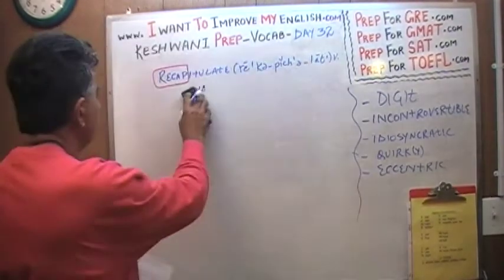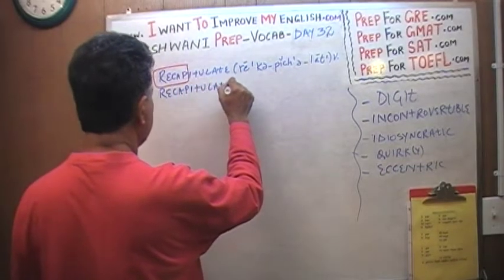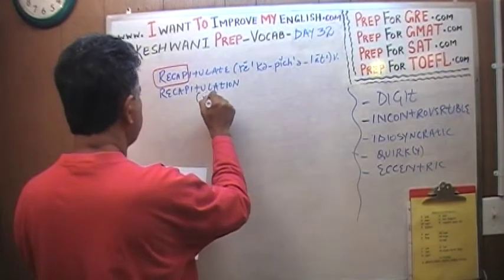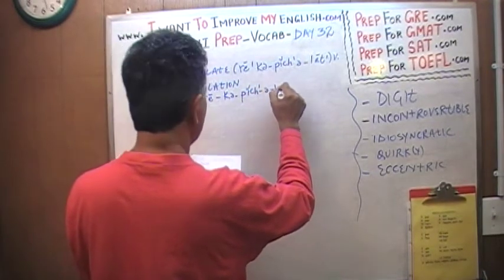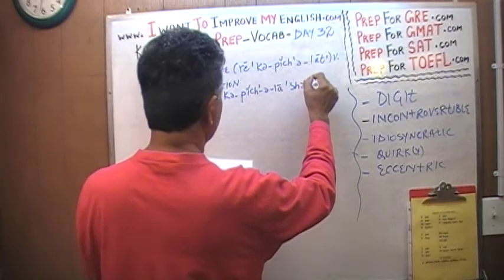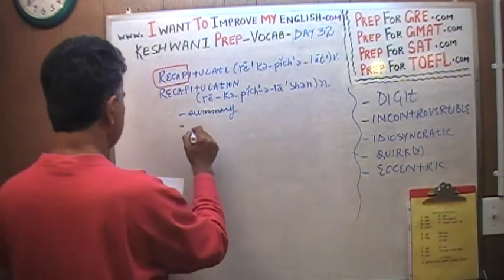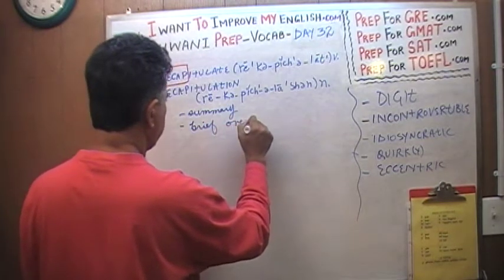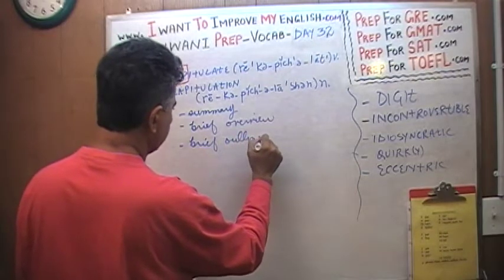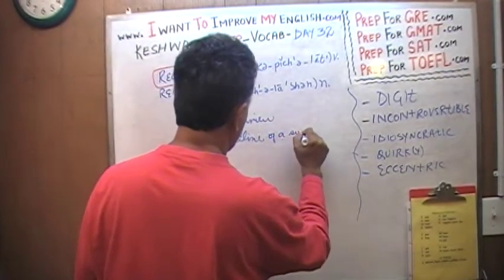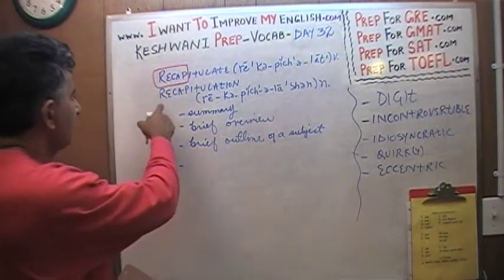Let's put down the noun form as well: recapitulation. Recapitulation — which simply means a summary, a brief overview, a brief outline of a subject. And finally, two more words which are good synonyms of recapitulation.